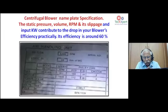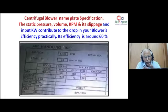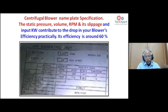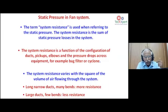Check what the blower nameplate specifies: static pressure, volume, and RPM. In AHUs in many buildings audited, almost 20% belt slippage was found — neglected because the equipment is in a secluded area. IoT sensors on blower speed can monitor RPM and detect transmission losses. If a blower's efficiency is only 60%, static pressure and RPM slippage of 10–20% can be corrected with monitoring. This is a critical but often overlooked area.